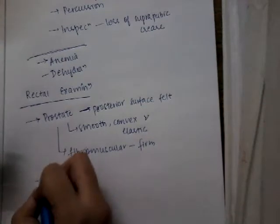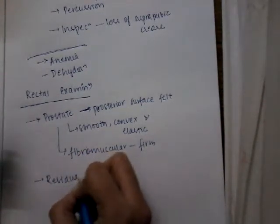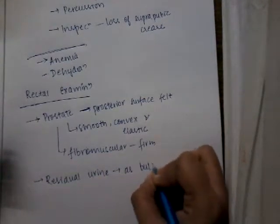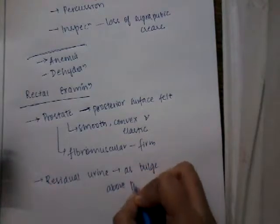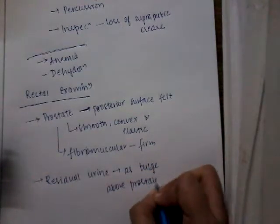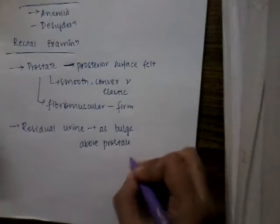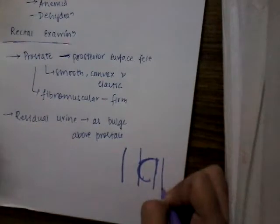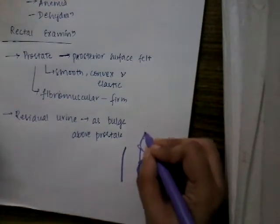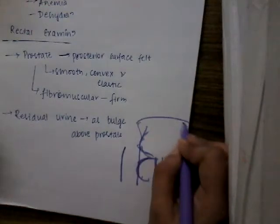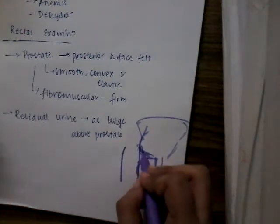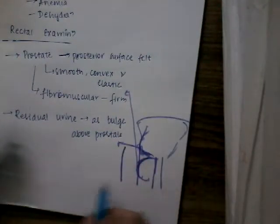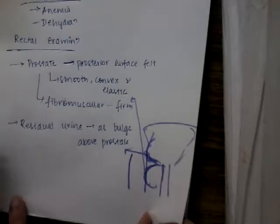Sometimes through per rectal examination, residual urine can also be felt. This is basically felt as a bulge above the prostate. Above the prostate it can be felt as a bulge. So this is the residual urine above the prostate. This is what we see on per rectal examination.